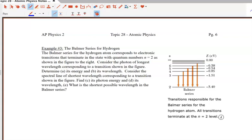Welcome to example number three, the Balmer series for hydrogen. In this question, we are given the energy level diagram. You can see it here shown to the right. We're seeing all these transitions which represent the Balmer series.